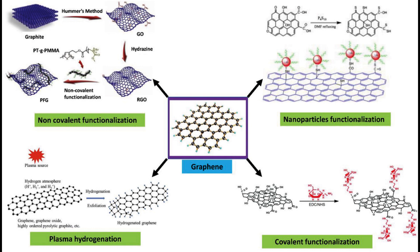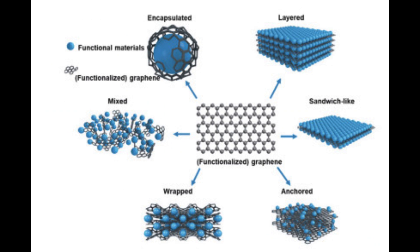Non-covalent functionalization involves weak interactions, such as pi-pi stacking, van der Waals forces, or electrostatic interactions, between graphene and functional molecules. This method is generally reversible and preserves the pristine graphene structure to a greater extent. Non-covalent functionalization is often used to disperse graphene in solvents or matrices.